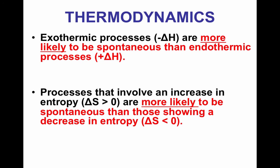So there are endothermic processes that are spontaneous, but typically exothermic is more likely. And then processes that involve an increase in entropy, so when delta S is greater than zero, those are more likely to be spontaneous than those showing a decrease. So again, if delta S is positive, it's more likely. And if delta H is negative, it's more likely to be spontaneous.